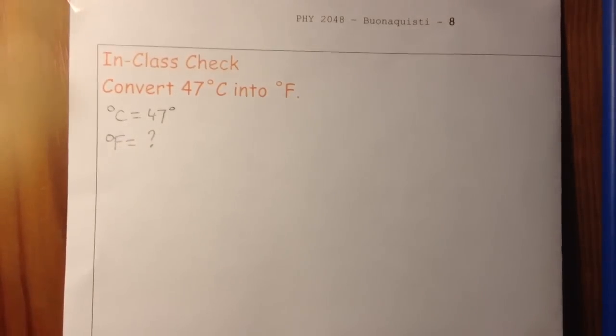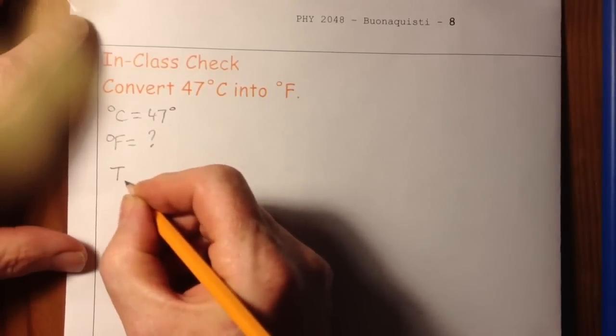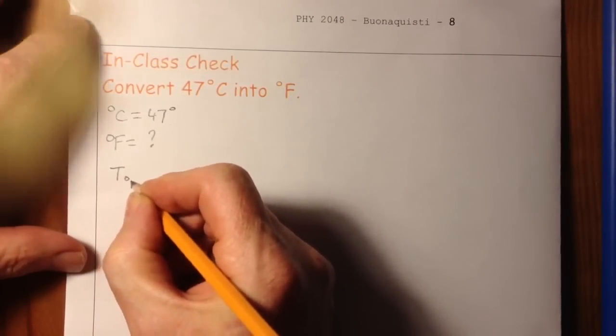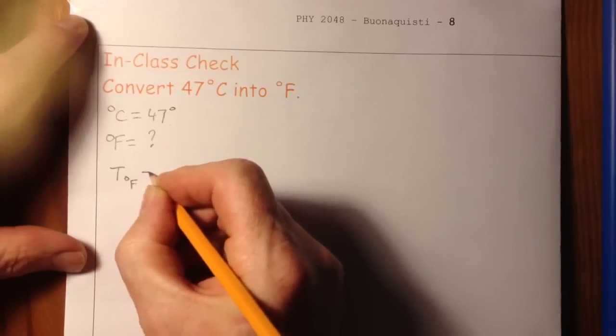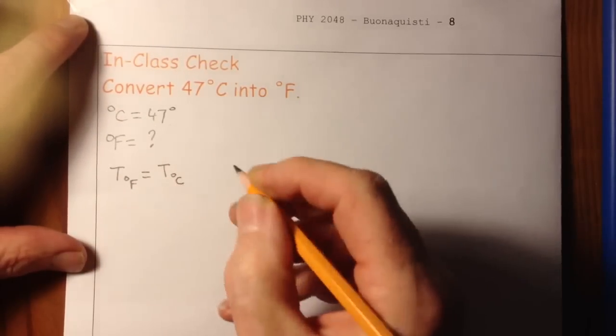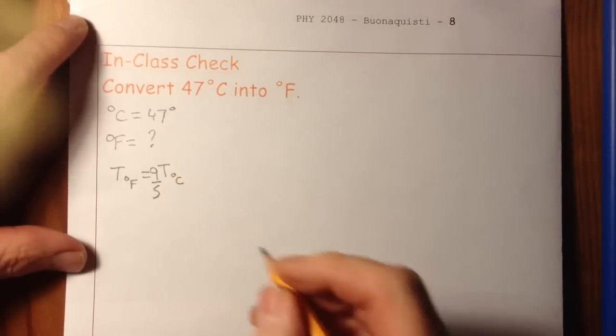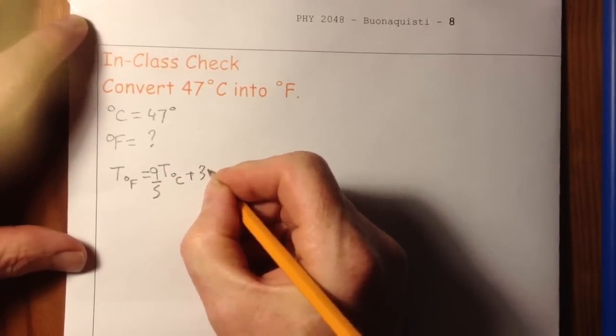So I need a conversion factor. The conversion factor is temperature in degrees F is equal to the temperature in degrees C multiplied by 9 over 5 plus 32.